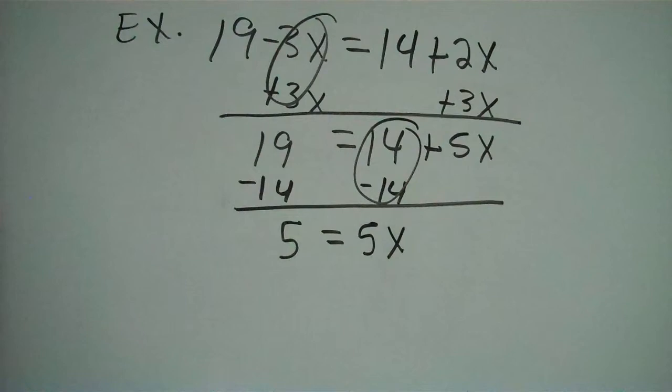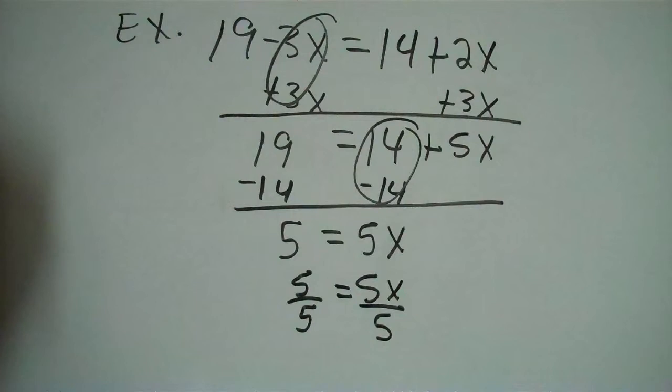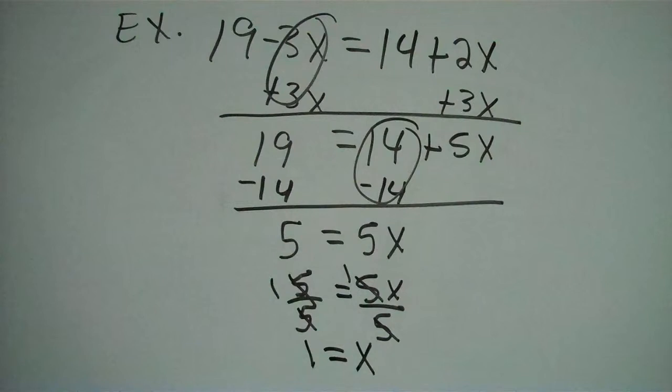Now I need to make that a 1x over here. So I'm going to take that 5x and divide by 5, which means I take this 5 and divide by 5. Well, that gives me a 1. That gives me a 1. So my final answer, I get 1 equal to my x. So notice, variables first, numbers next, then you're usually going to divide and be done.